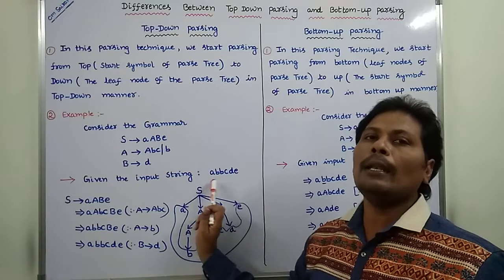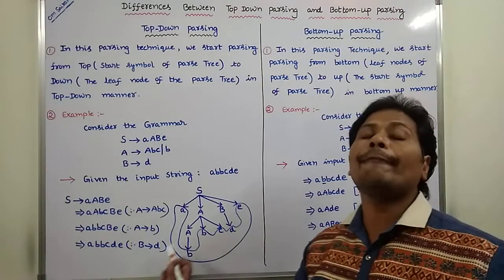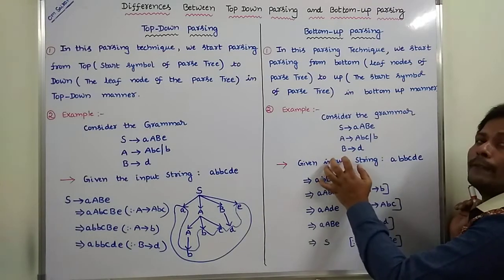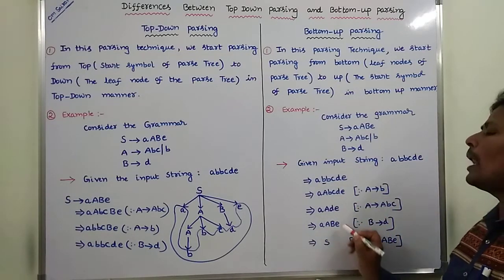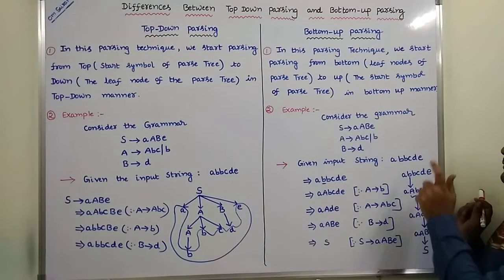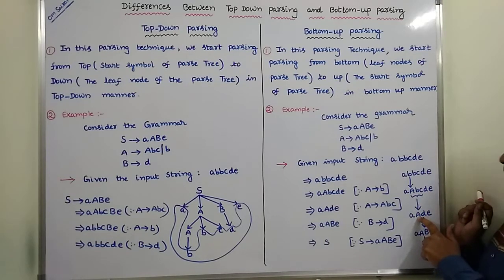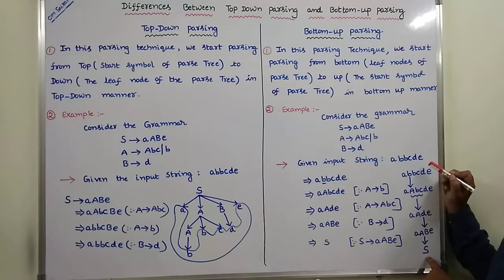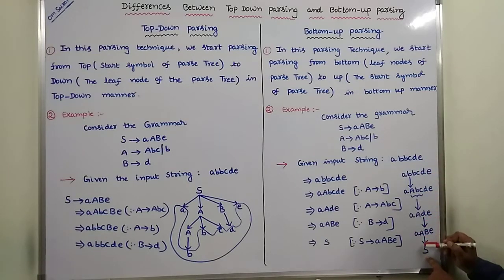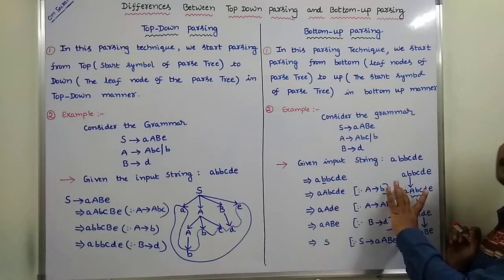In top-down parsing, we start from the start symbol and pass down to the leaf nodes. In bottom-up parsing, we start from the leaf nodes: b is reduced by capital A, then capital A, b, c is reduced by capital A, then d is reduced by capital B, then small a, capital A, capital B, small e is reduced by S.